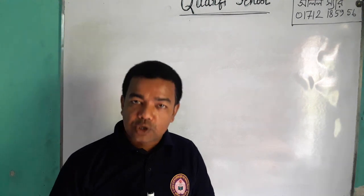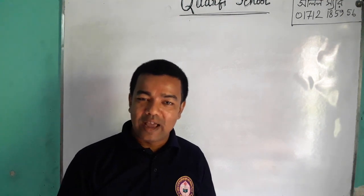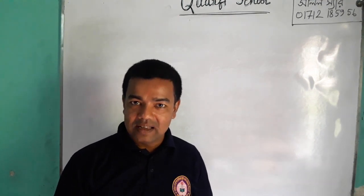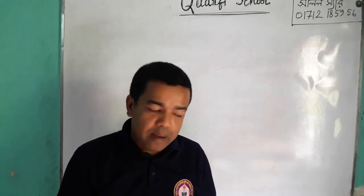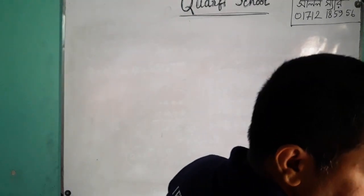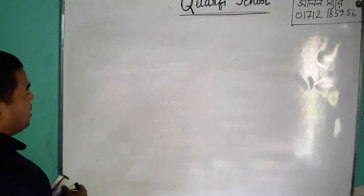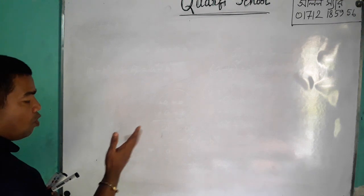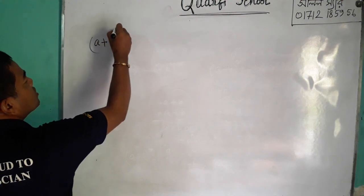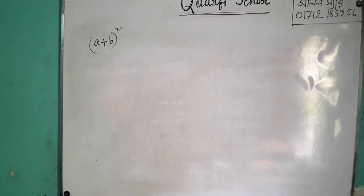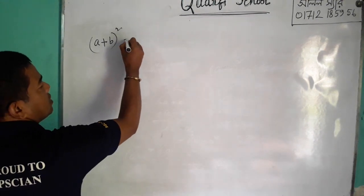A plus b whole square plus d square plus 2ab plus b square. A minus b whole square is equal to a square minus 2ab plus b square. A plus b into a minus b is equal to a square minus b square. We have to work through this one — A plus b whole square.